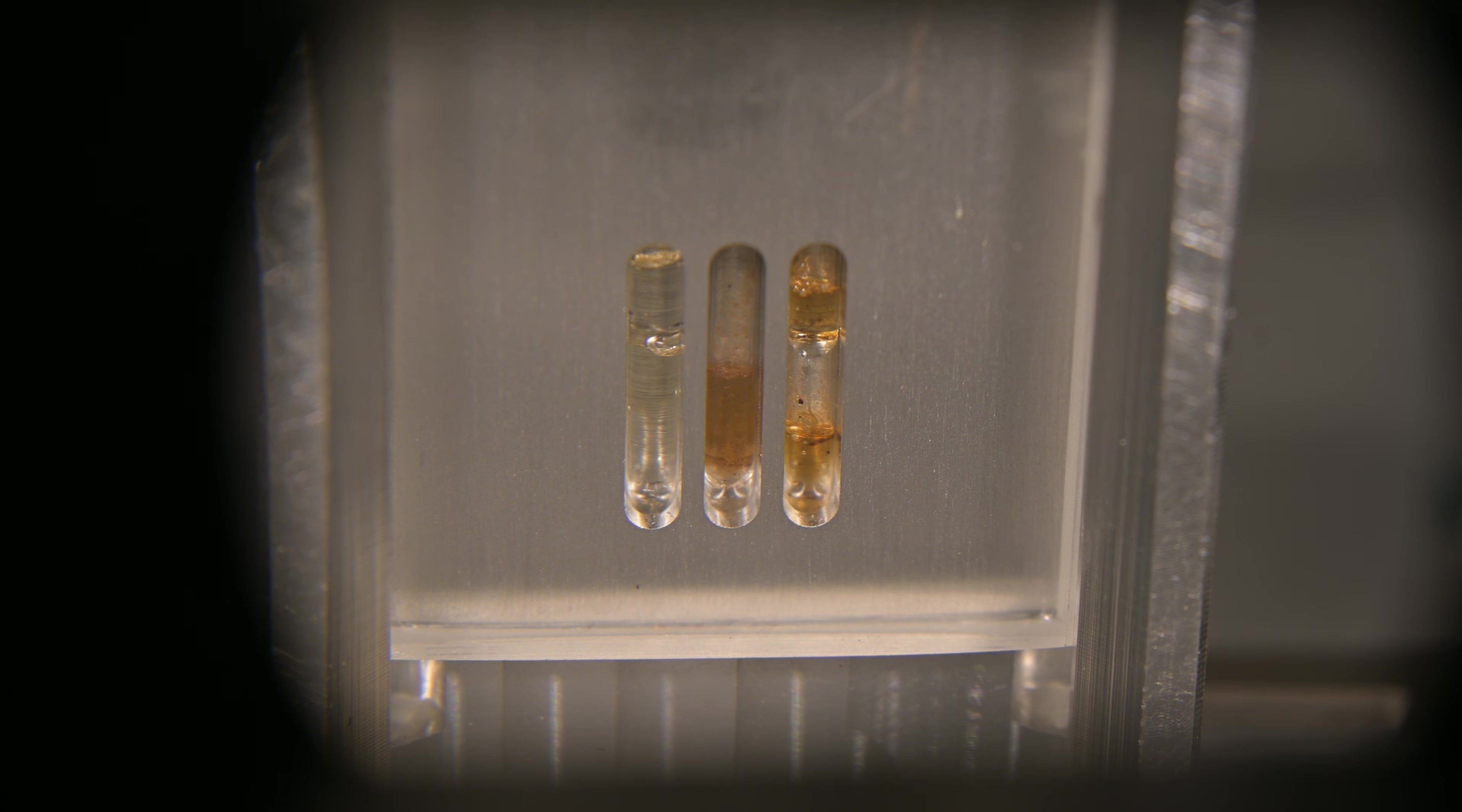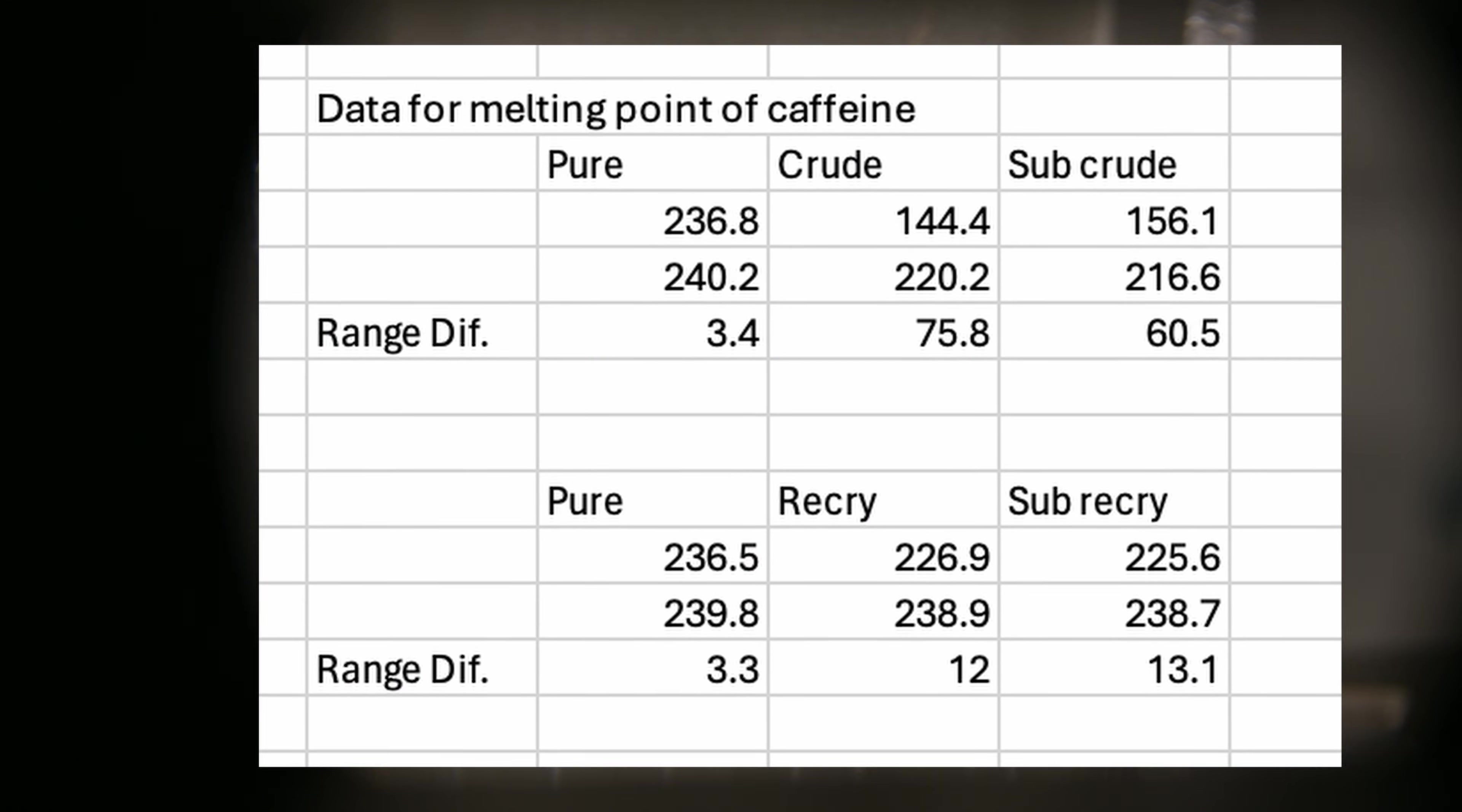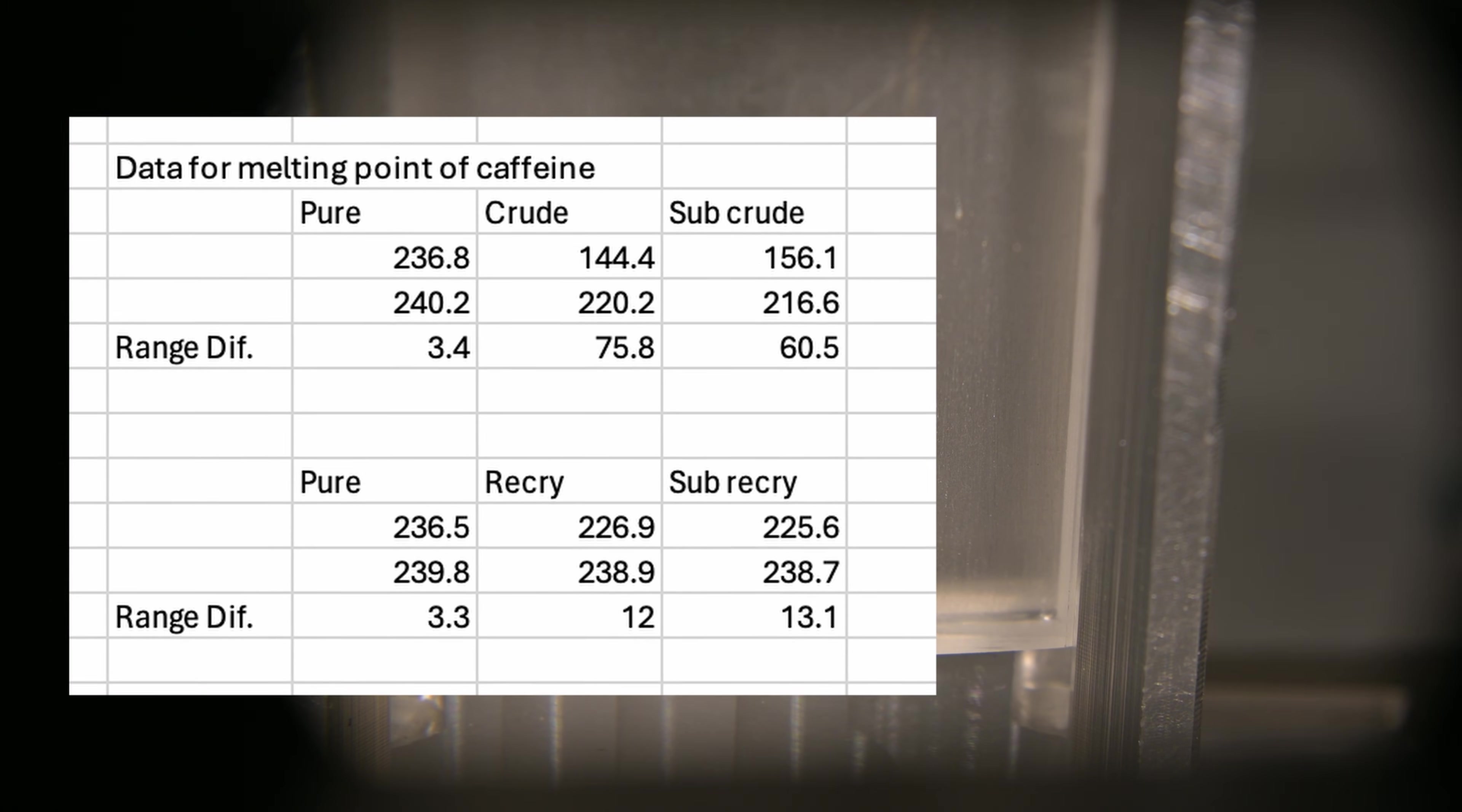One thing to watch out for with organic compounds is that continuing to heat too high will cause them to decompose, which we can see in our melting point samples. Now with all the data for our melting points in hand, let's take a look at it. We analyze melting point by viewing the range in which the melting point took place, and how closely it is to our expected melting point.